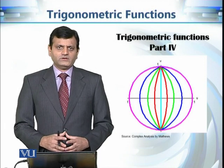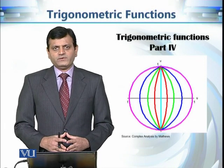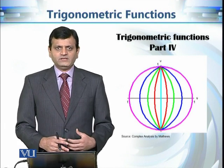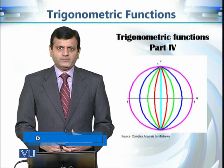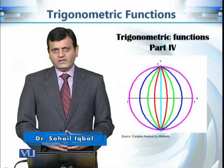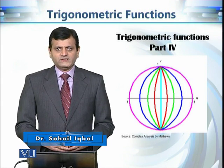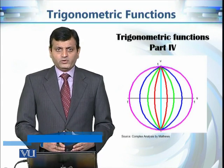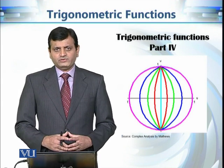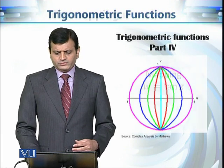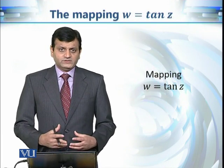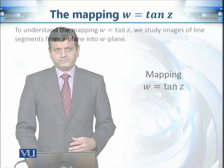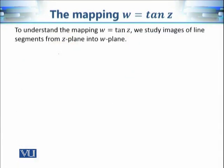This is the fourth module on trigonometric functions. So far we defined them, discussed different identities and properties of these trigonometric functions, and most importantly in our previous module we discussed the mappings sine(z) and cosine(z) and explored their beautiful and interesting geometry. In this module we are going to continue our discussion of mappings and will focus on the tangent(z) function.